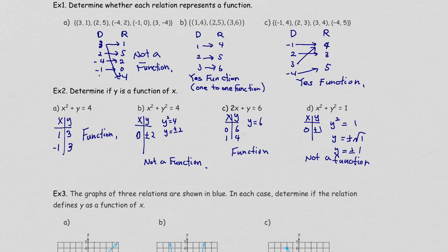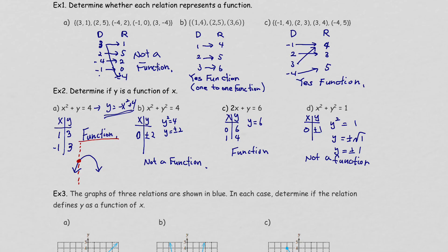Another useful tool is the vertical line test to find out if a graph is a function or not. If we know the shape of the graph from the equation, we can apply the test. For example, the quadratic equation y = -x² + 4 gives an upside-down parabola. If you draw a vertical line anywhere on that graph and it meets only one point, it is a function.